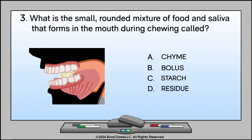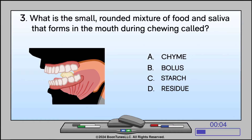What is the small, rounded mixture of food and saliva that forms in the mouth during chewing called? A. Chyme. B. Bolus. C. Starch. D. Residue. The answer is B: Bolus.